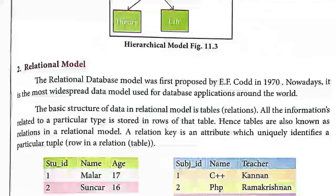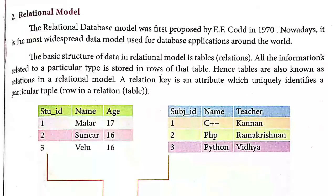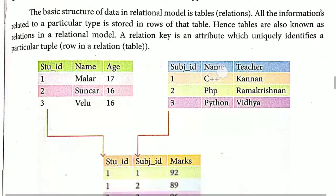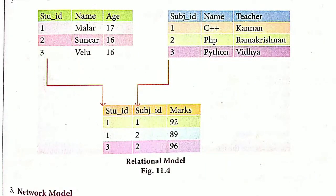Next is the relational model, where each piece of data is related to another by means of a relational key. For example, one table has student ID, name, and age, and another table has student ID, name, and teacher — they are related to each other by the common column student ID, which serves as the key. This key may be a primary key or foreign key, which we will cover in upcoming chapters. The relational model combines these two tables to form related data.